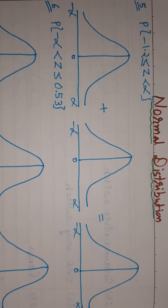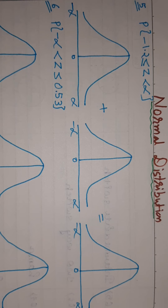Good morning students. Welcome to the 4th session of the 7th chapter, that is normal distribution. In today's session we will continue finding areas using the Z table, as we did in the previous session.